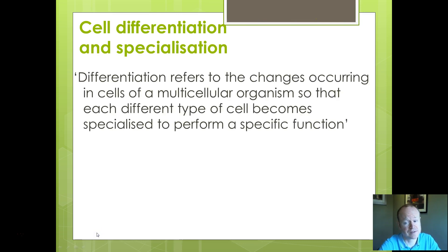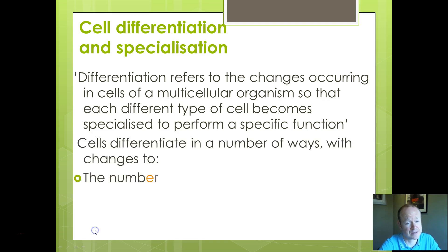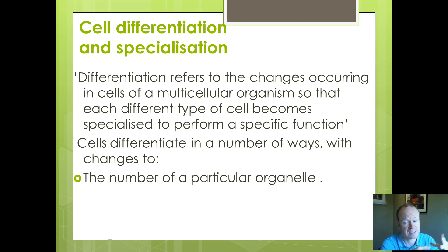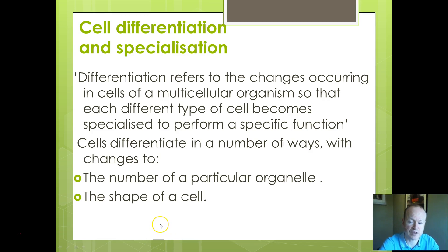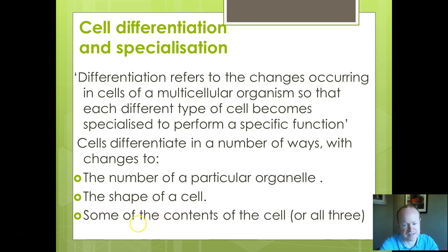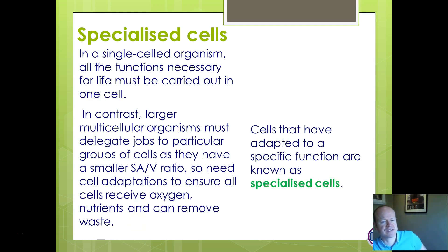So differentiation — producing different kinds of cell. Differentiation refers to the cells in a multicellular organism needing to have specialisms or different functions. They can differentiate by having different numbers of a particular organelle — for example, if it's a particularly active cell, they might have lots of mitochondria — different specialized shapes, or different forms for a particular function, for example highly folded to give a large surface area. Remember, that's your default biology answer. And also the contents of the cell.